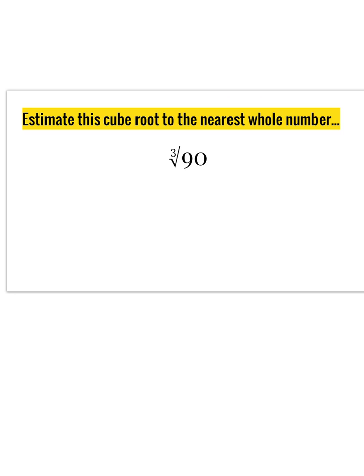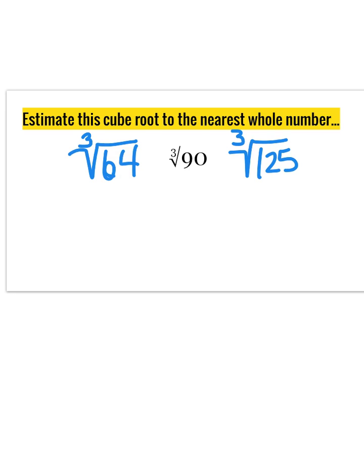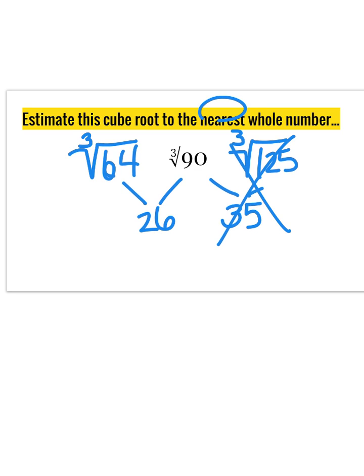Go ahead and pause and try to estimate the cube root of 90 on your own. The cube root of 90 is not a perfect cube, but it is between two other perfect cubes: 64 and 125. 64 is 26 spaces away from 90, while 125 is 35 spaces away. So for the nearest whole number estimate, I'm going to use the cube root of 64, which happens to be 4.